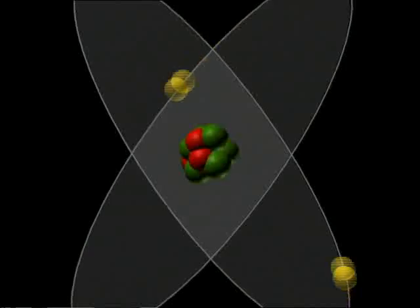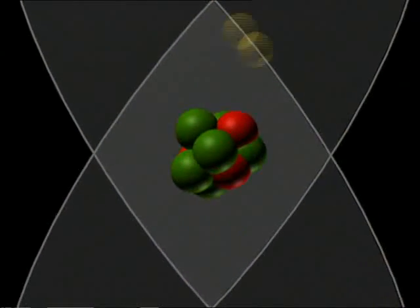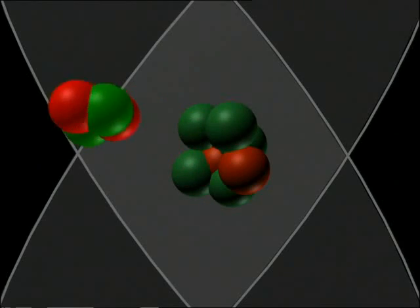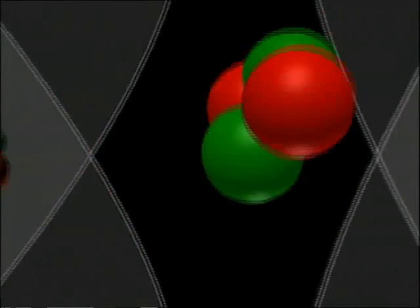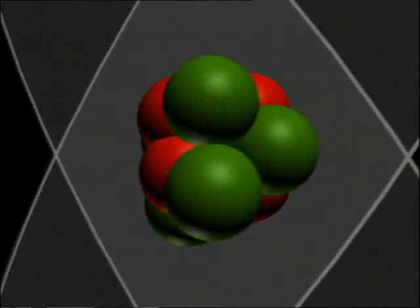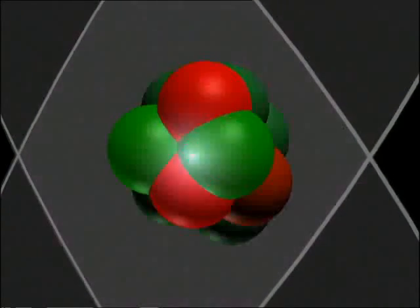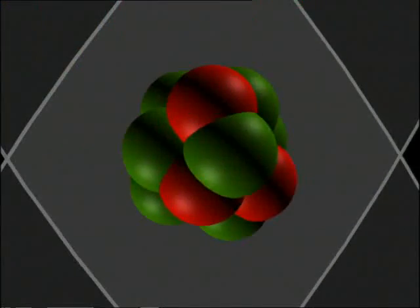When a radioactive atom emits alpha radiation, it loses an alpha particle from its nucleus. Each alpha particle is made of two protons and two neutrons. Alpha radiation consists of positively charged particles.